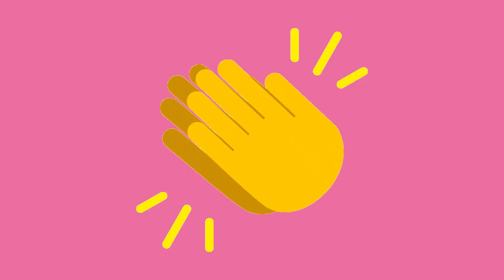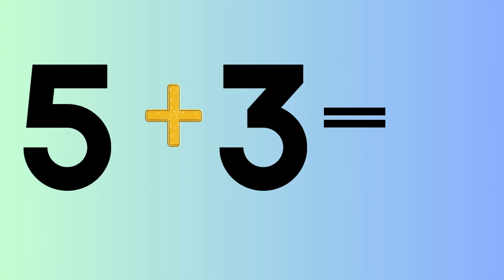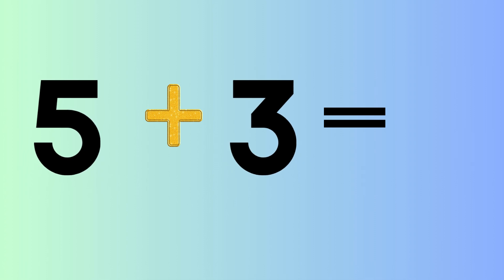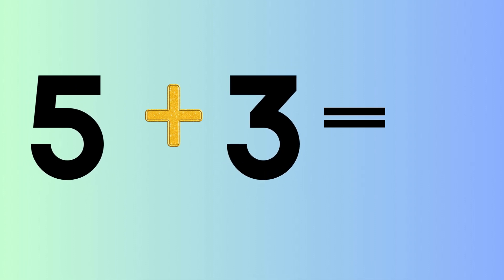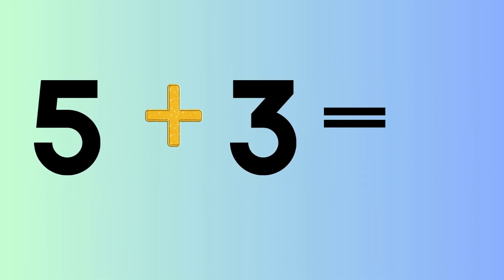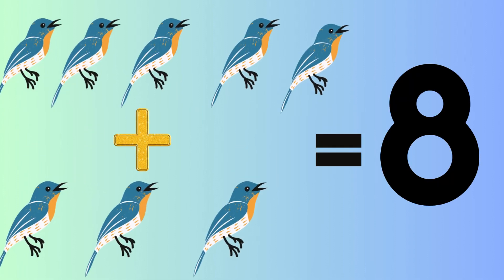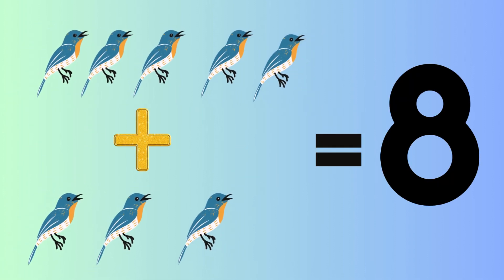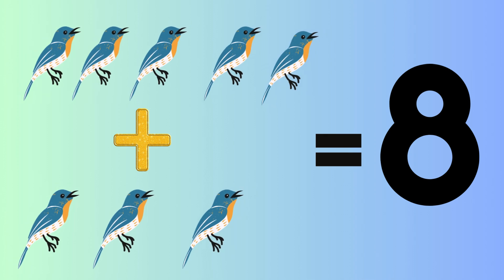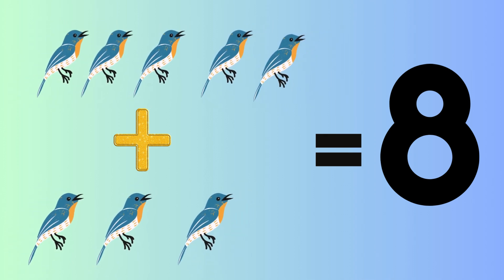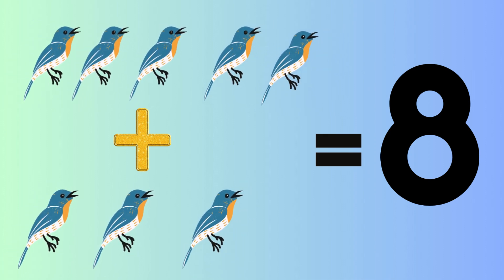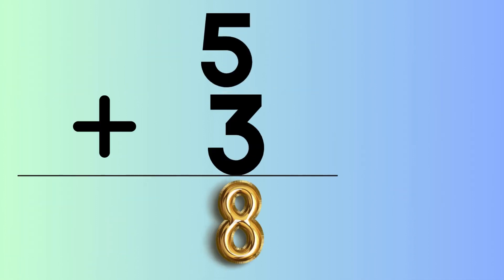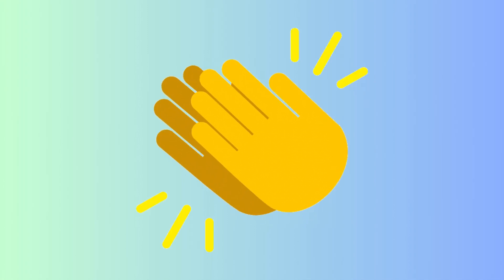Five plus three equals eight: five birds plus three birds equals eight birds. So, five plus three equals eight.